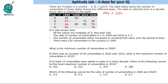The first question: what is the minimum number of universities in 2000? To minimize, we assume the numbers do not increase — they remain the same. So the values carry forward: 70 and 60, giving totals of 120, 200, and 260. The answer is 260.